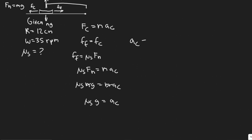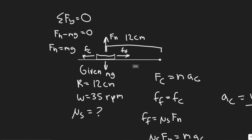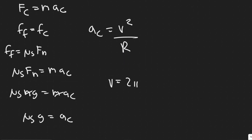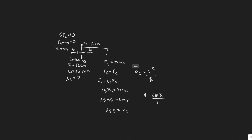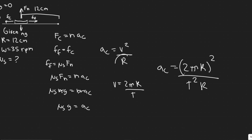A_c equals v² over R. The radius where the coin is placed is 12 centimeters. The velocity is 2πR divided by T (the period). Plugging in: A_c equals (2πR)² divided by T², then divided by R — which simplifies to 4π²R divided by T². We just need to find T and plug in the values.